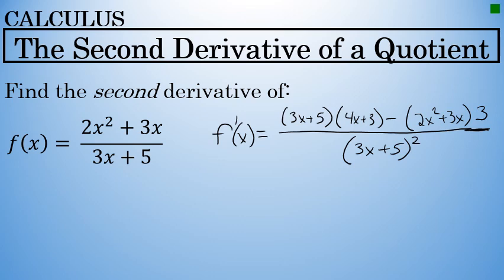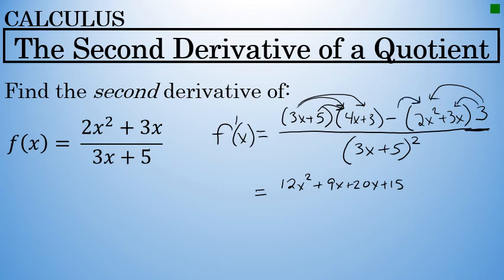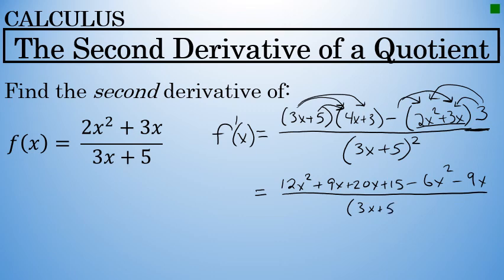We have the first derivative already, but now I need to simplify the numerator. I'll first multiply (3x + 5)(4x + 3), which results in 12x² + 9x + 20x + 15. Then I'll distribute negative 3 through the quantity (2x² + 3x), which results in −6x² − 9x.